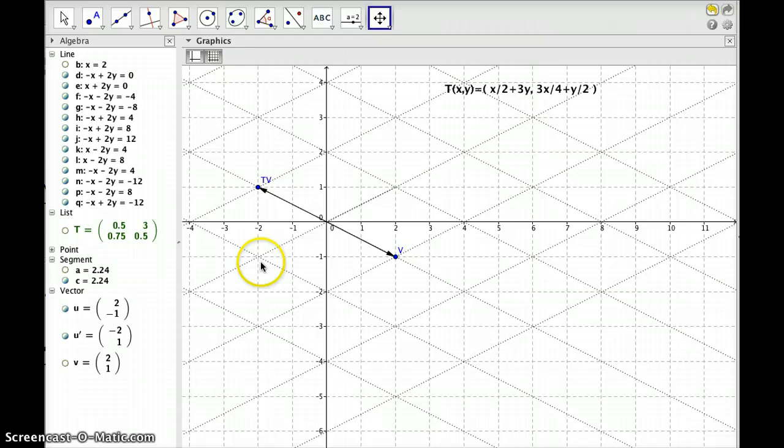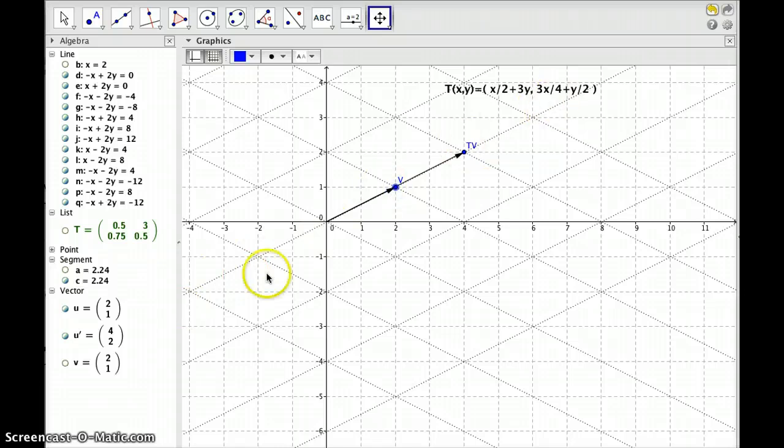So now I've graphed grid lines along the eigenvectors, so the grid lines going in the uphill direction here from left to right. Those are the grid lines associated with the eigenvector, 2, 1, and then the grid lines that are going downhill here from left to right are the grid lines associated with this eigenvector, 2, negative 1. And how do these help me?